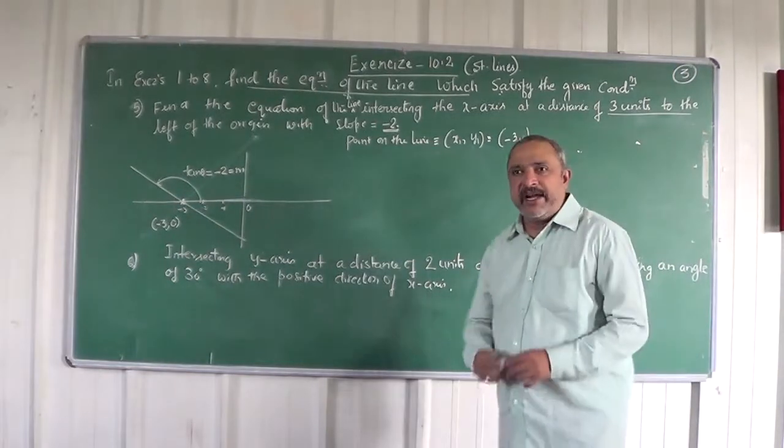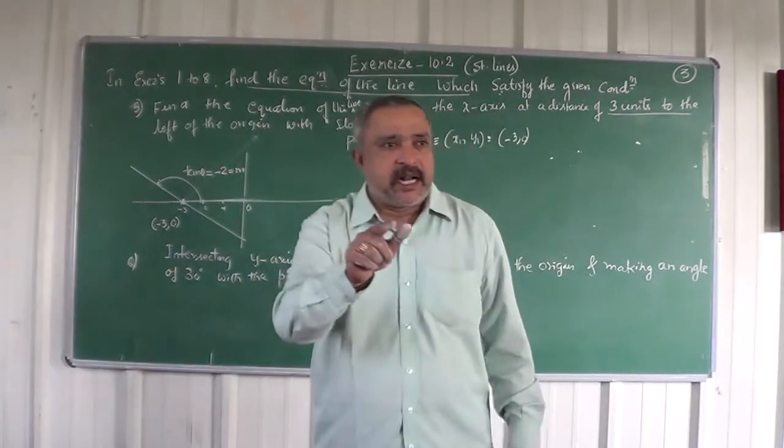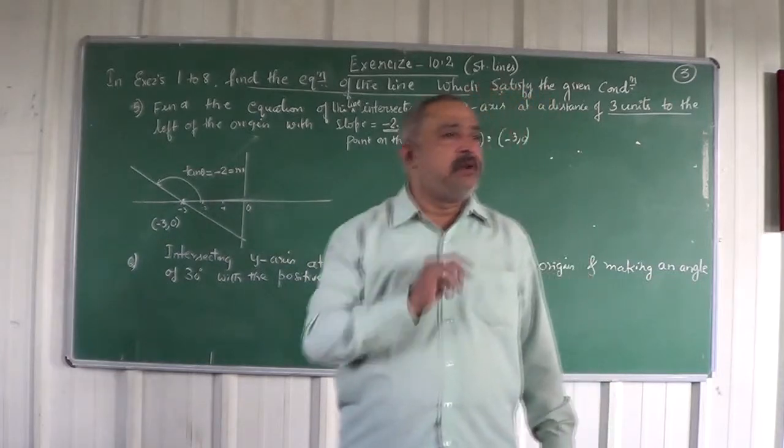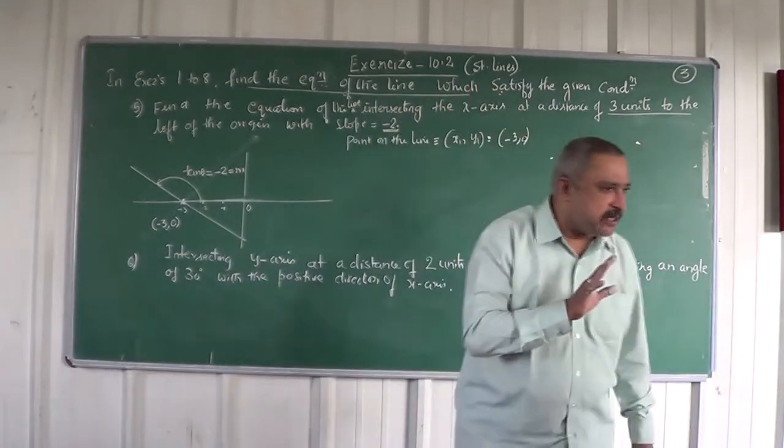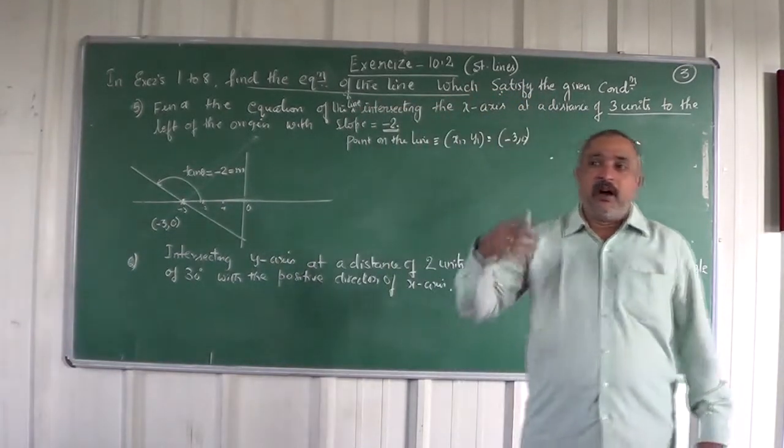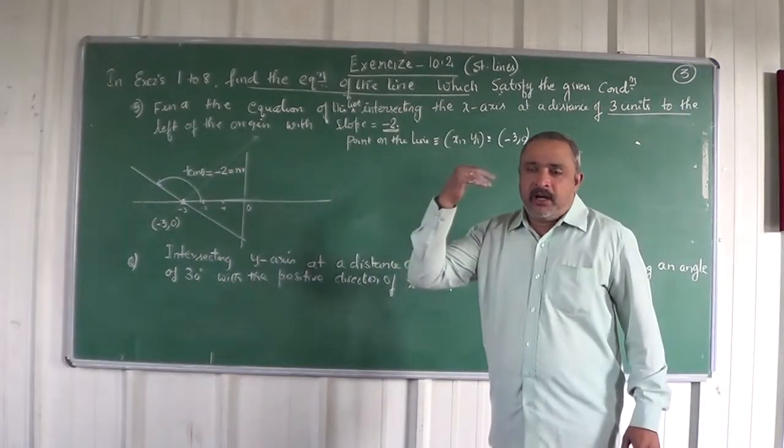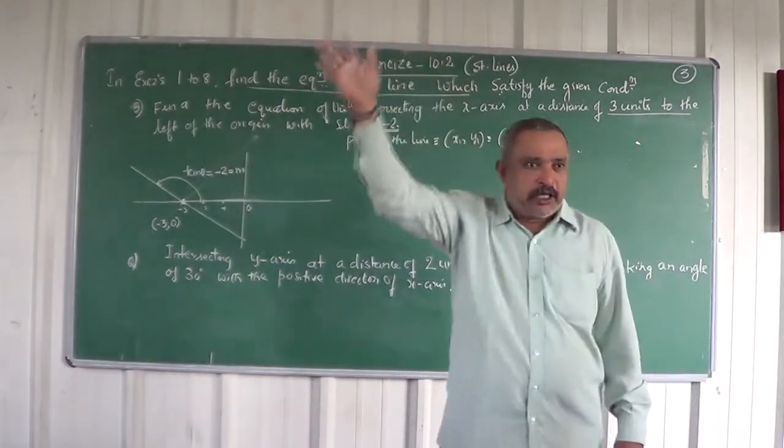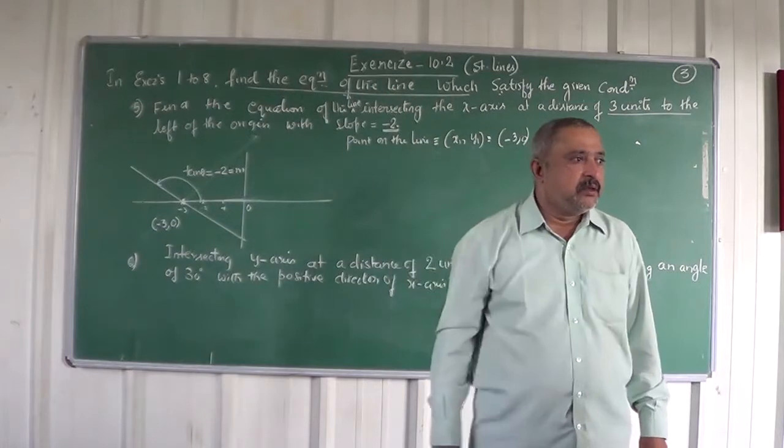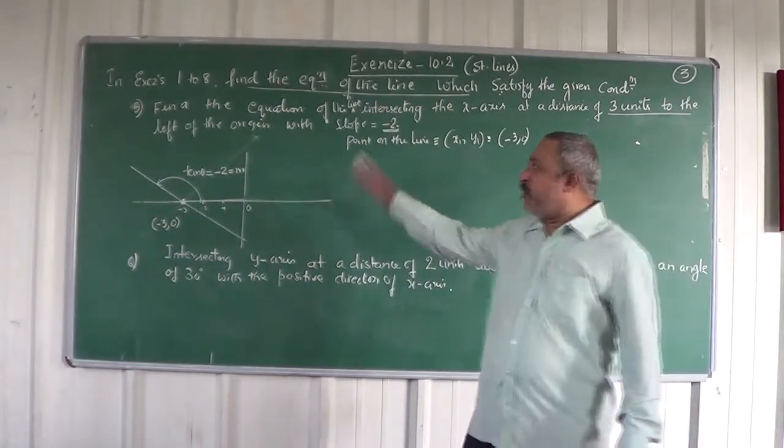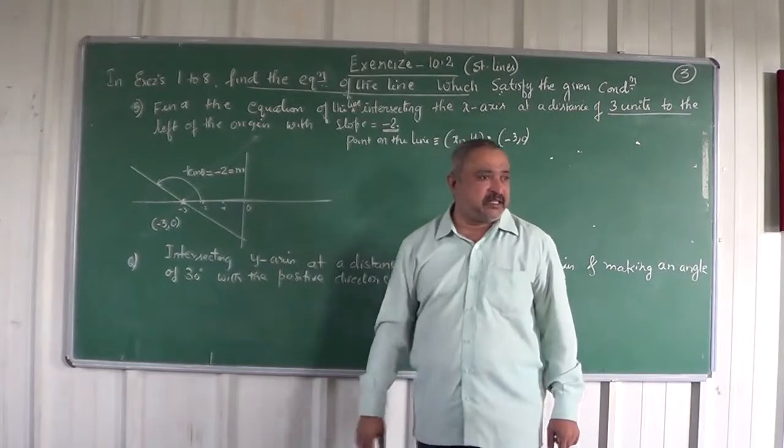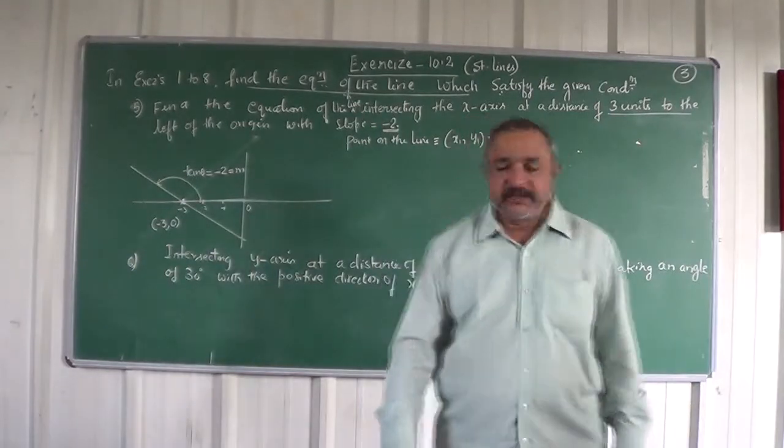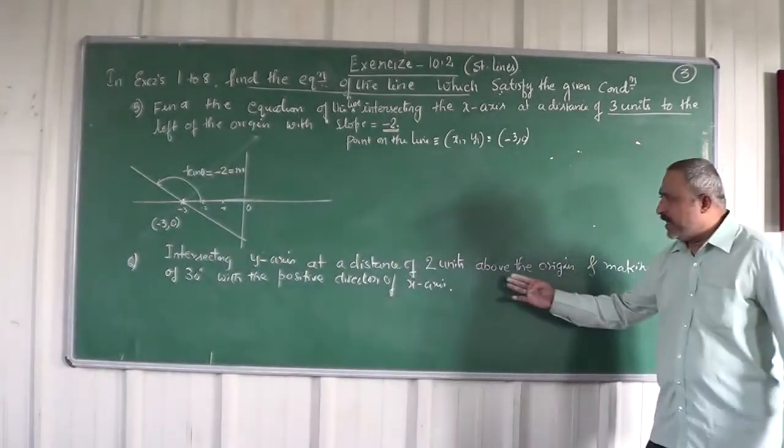Yes. If in the problem it is set that on to the right side of the x-axis, what would you have done? Then you would have taken the point as 3, 0. Or if in another problem, 4 units above origin, 0, 4, because above origin means it is obviously cutting y-axis.